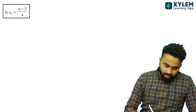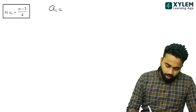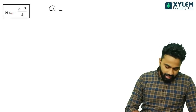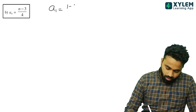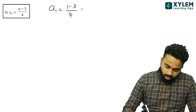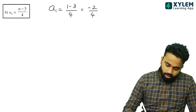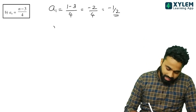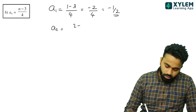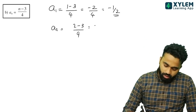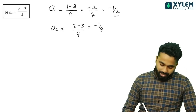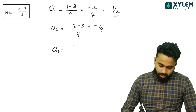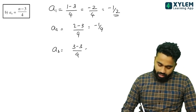The first term is the nth term. So, the nth term is 1: 1 minus 3 by 4, that is equal to minus 2 by 4, which equals minus 1 by 2. The second term A2 is equal to 2 minus 3 by 4, that is equal to minus 1 by 4. The third term A3 is equal to 3 minus 3 by 4, that is equal to 0.